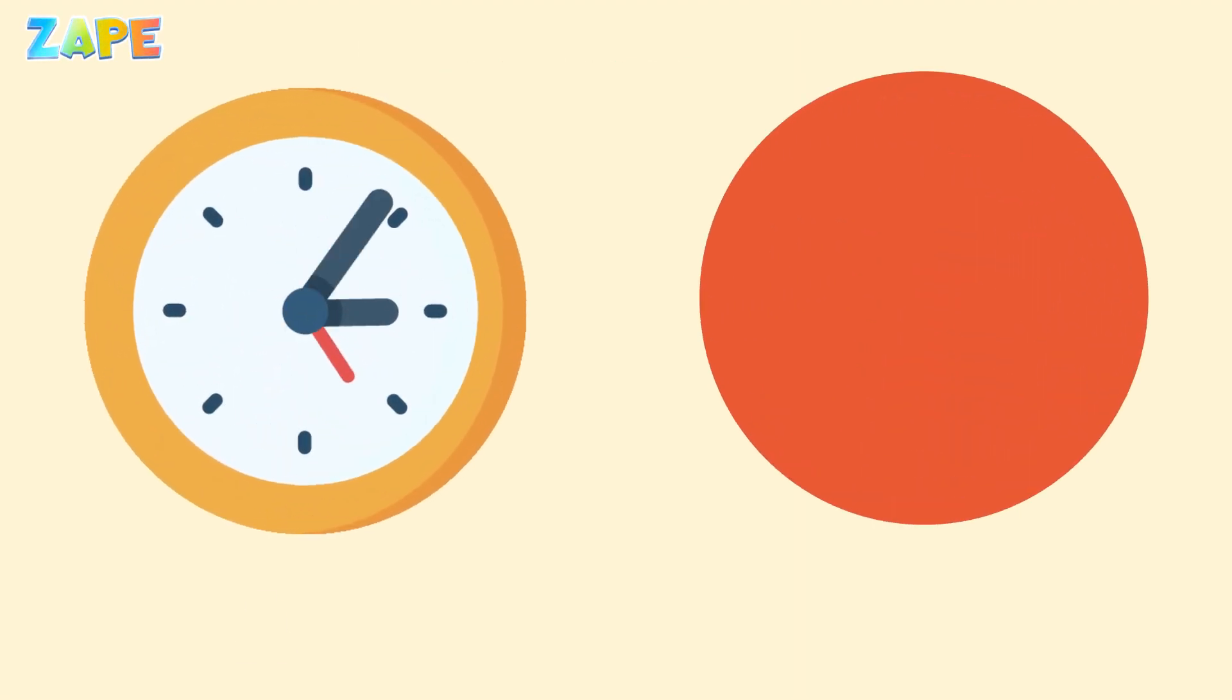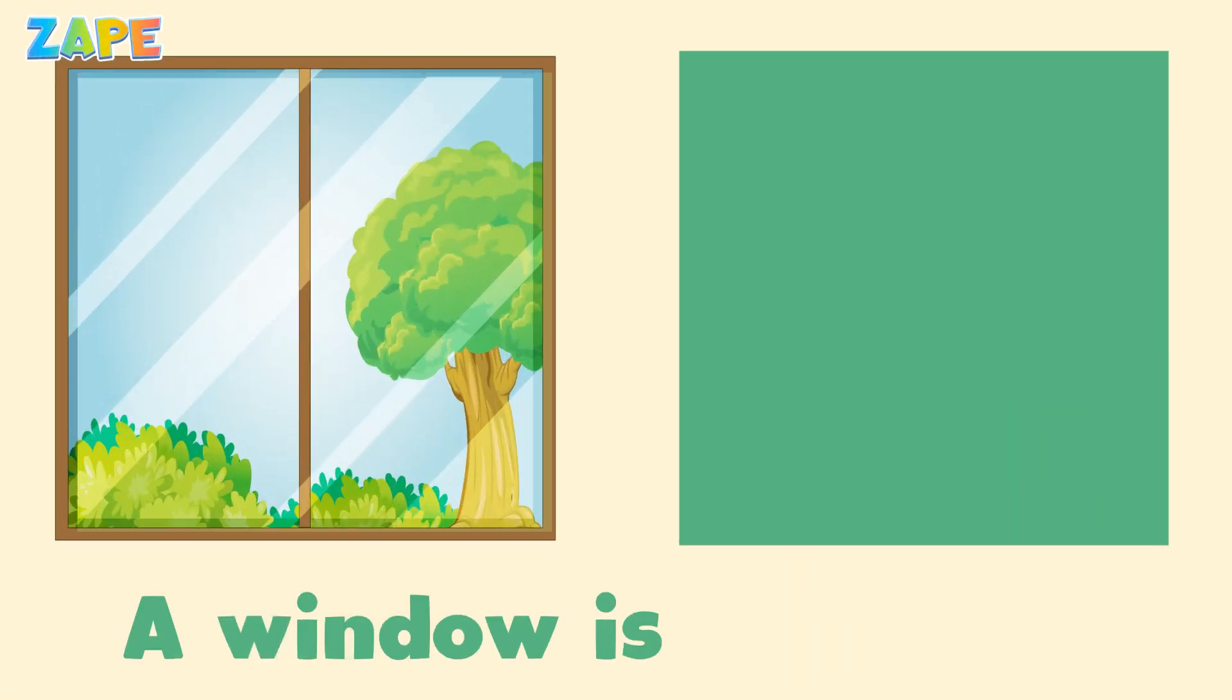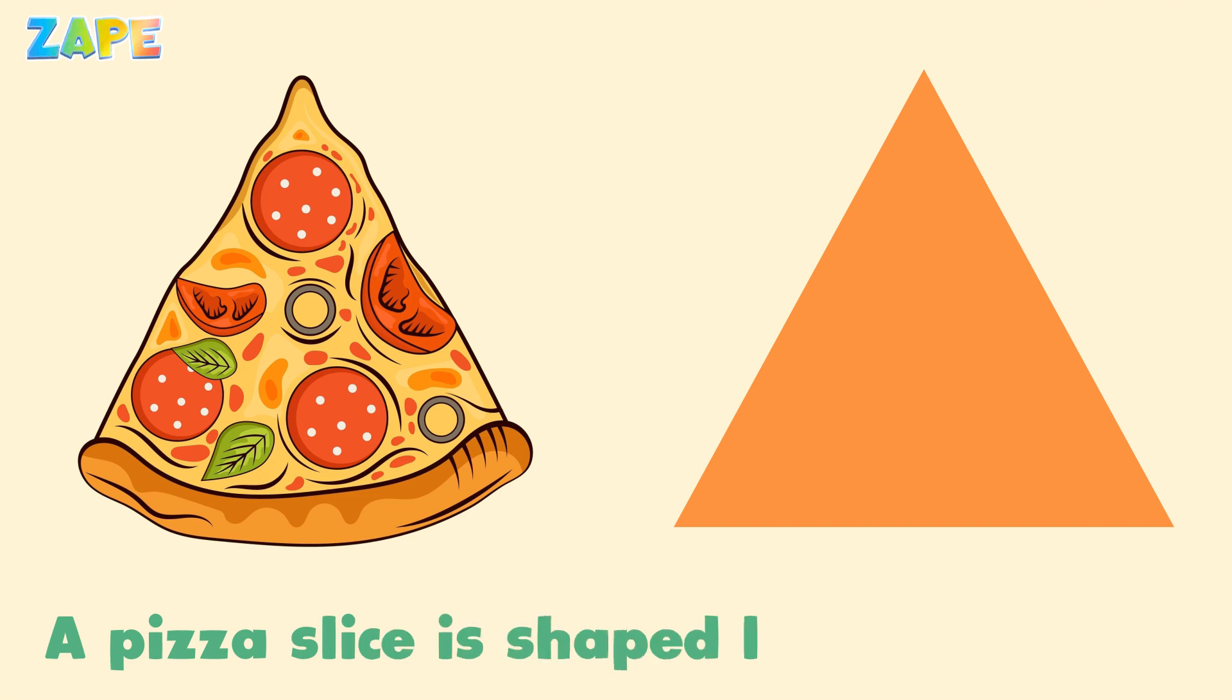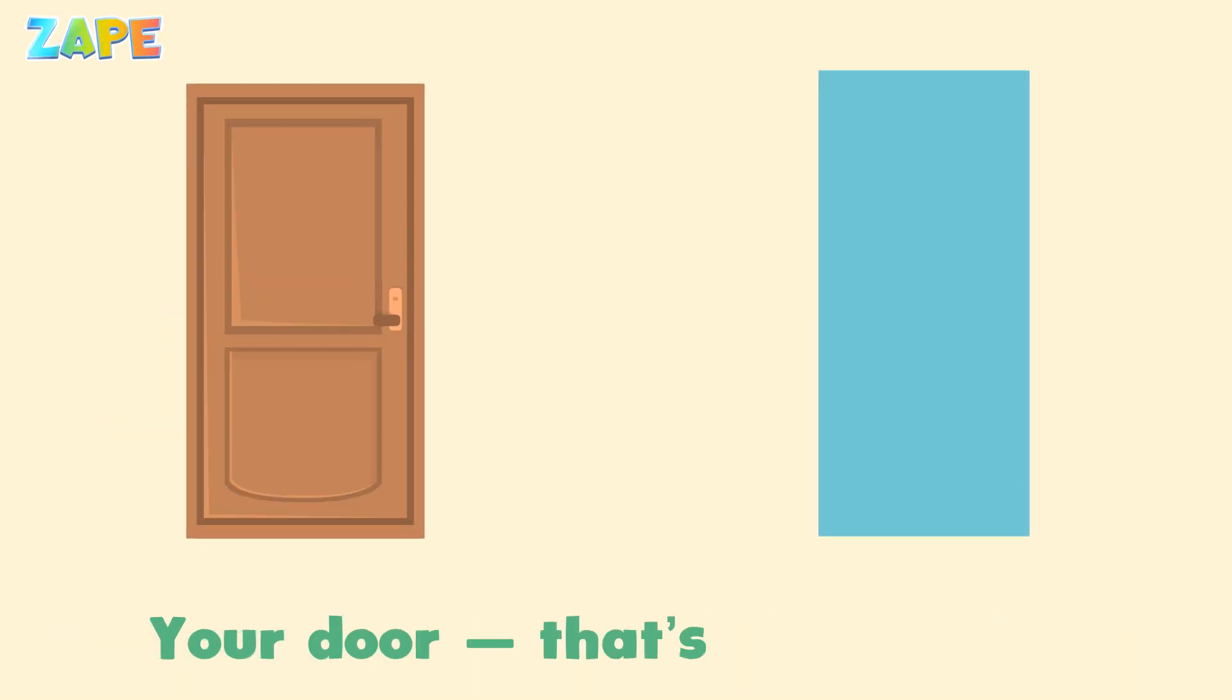2D shapes are everywhere. A clock is a circle, a window is a square. A pizza slice is shaped like a triangle, and your door, that's a rectangle.